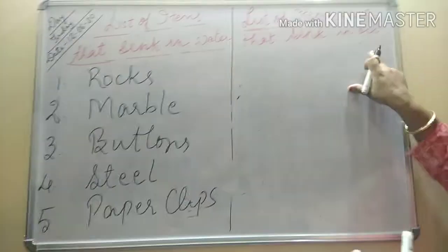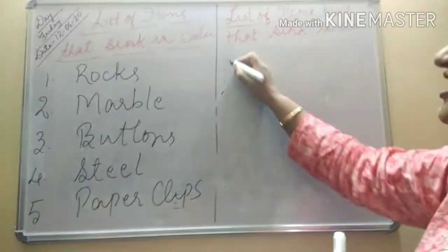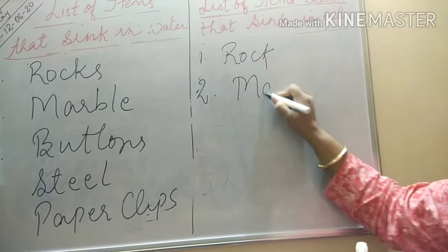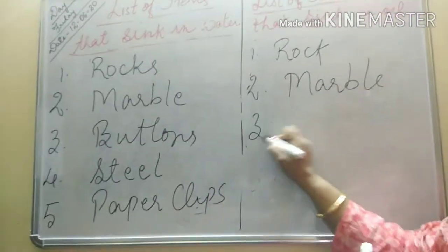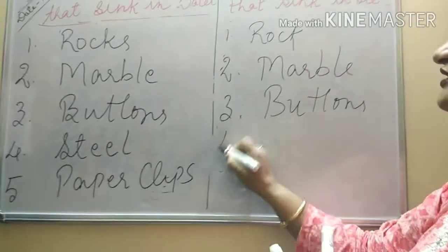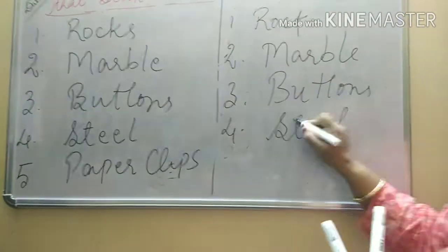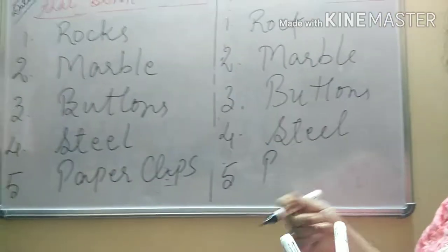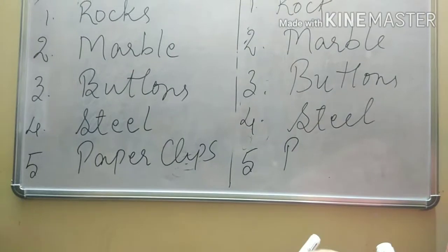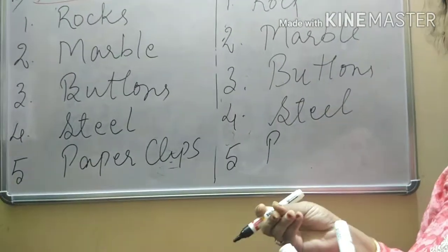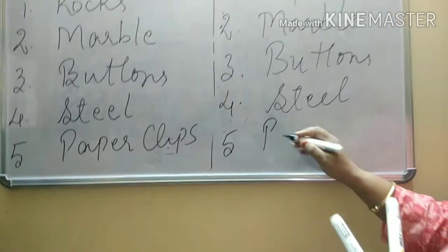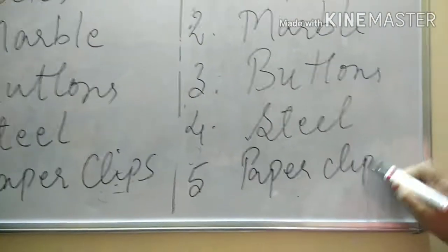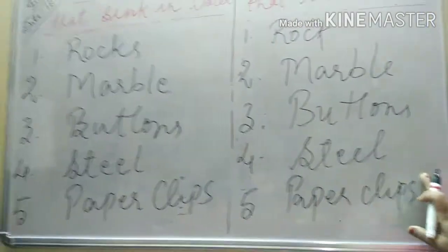So if things sink in water, they will sink in oil also. Number one: rock — yes, it will sink. Second: marble — yes, it will sink. Third: buttons — yes, it will sink. Fourth: steel — yes, it will sink. Last: paper clips — yes. Paper clips are generally made up of an alloy, which you will study in a higher class, or certain cheap paper clips are made up of iron, which is a metal, so paper clips will sink in oil.